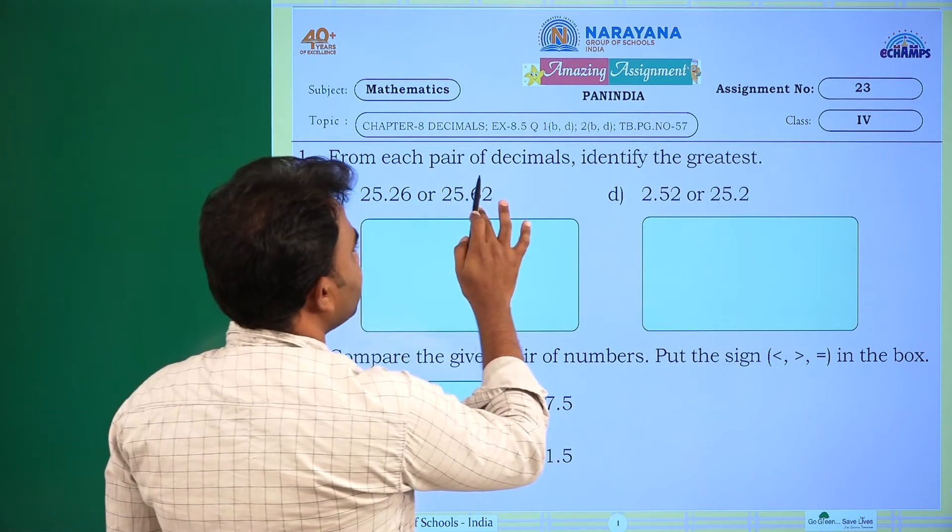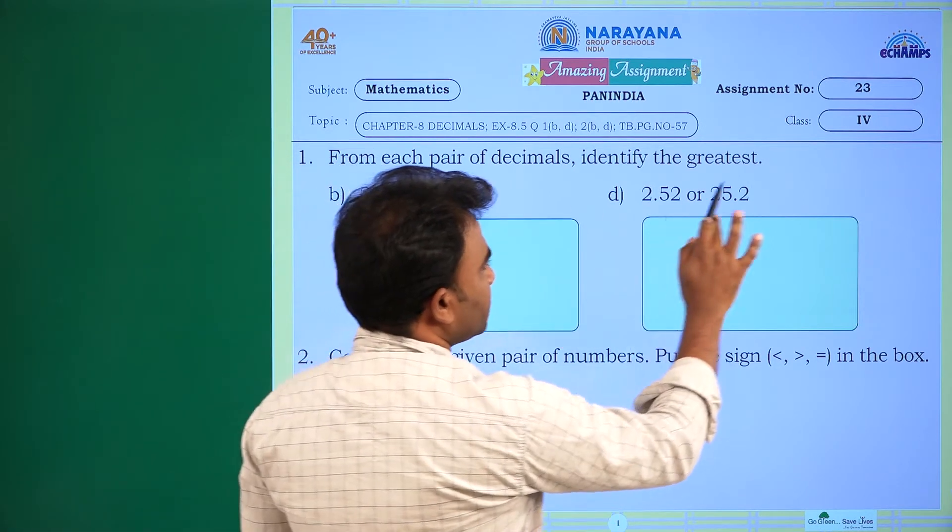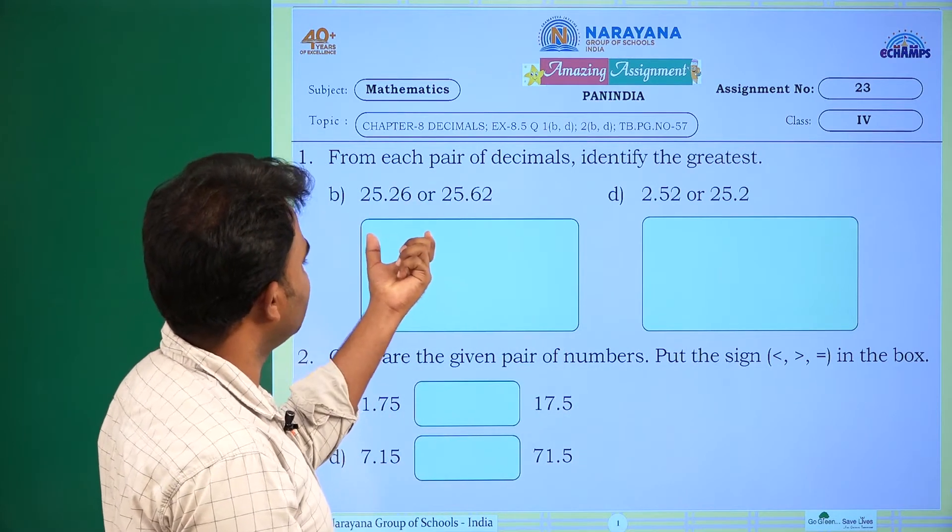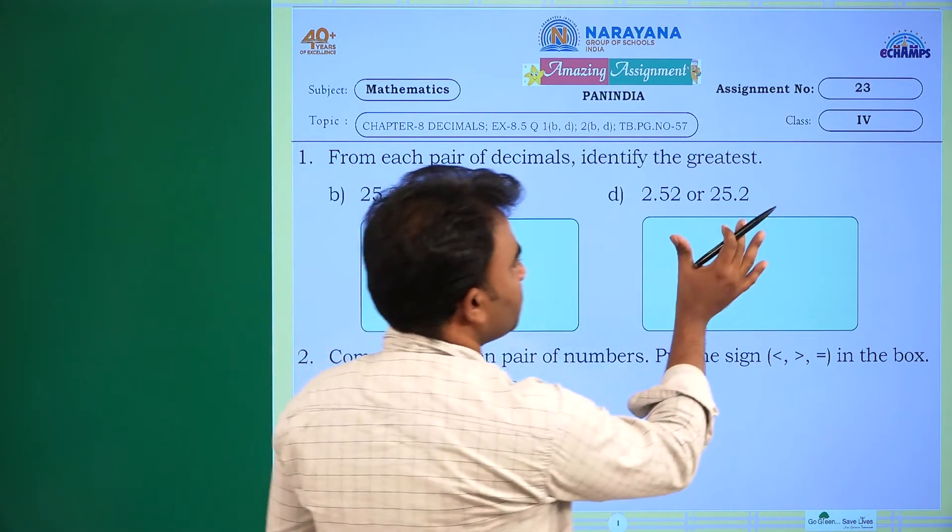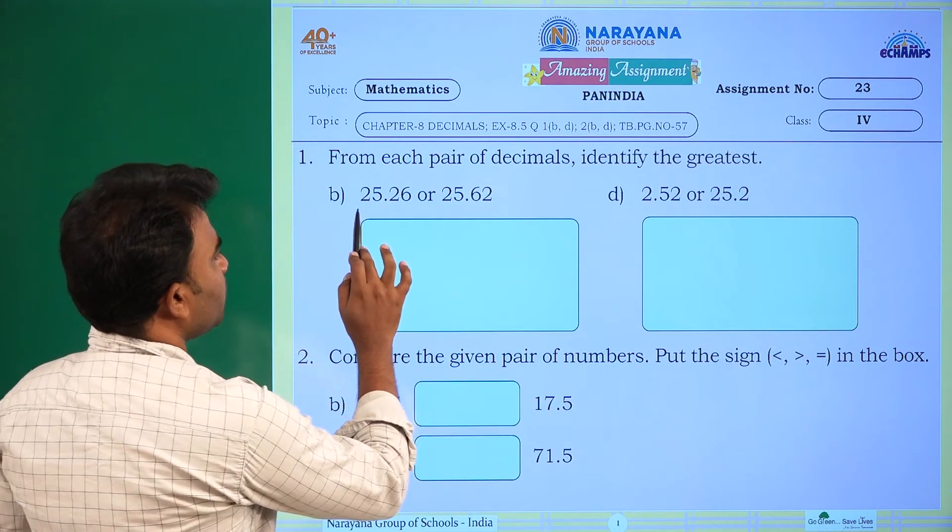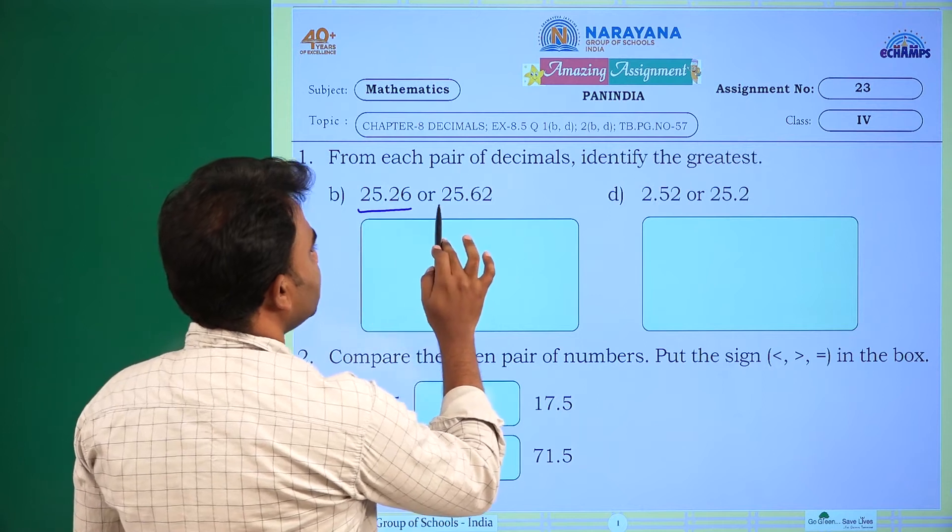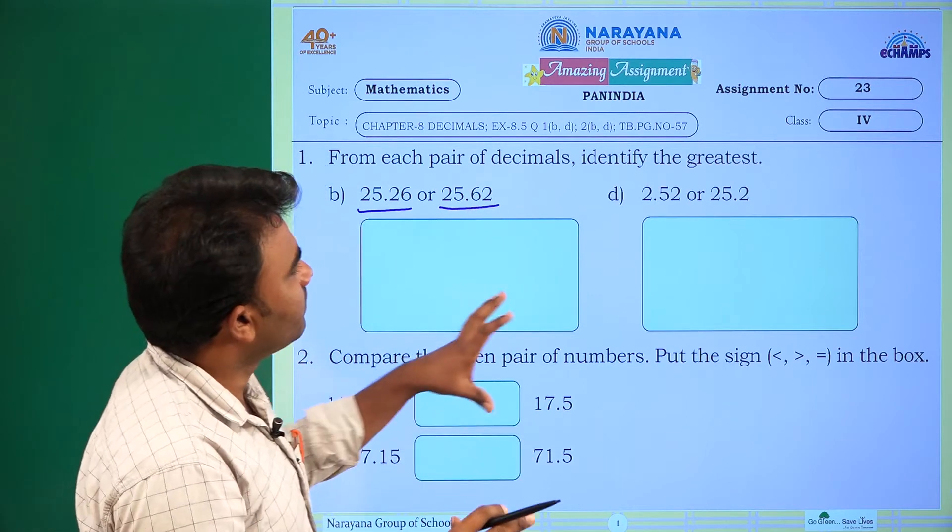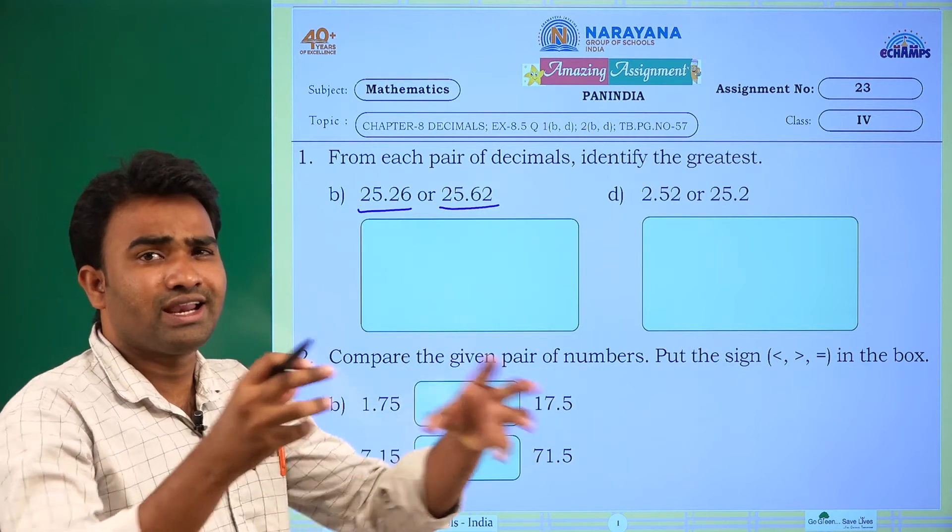First problem, from each pair of decimals, identify the greatest. These are the pair of decimals given. First problem: 25.26 and 25.62. What they are asking us? They are asking us to find the greatest one.